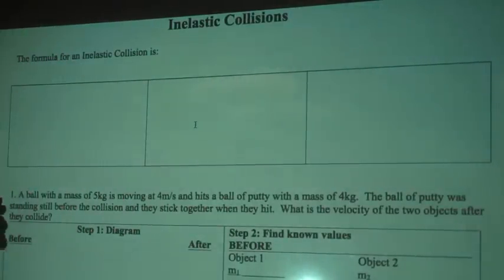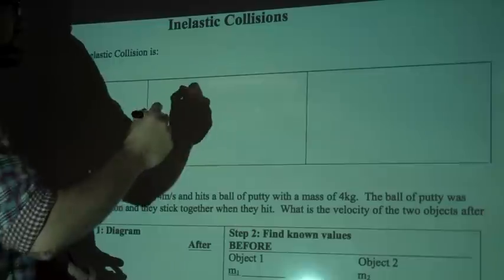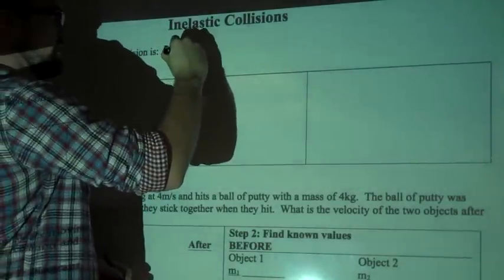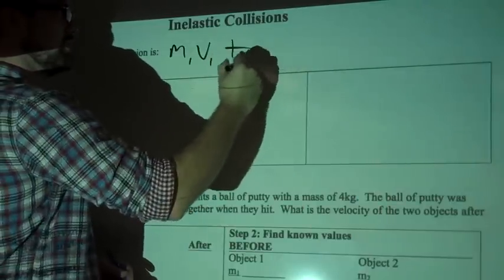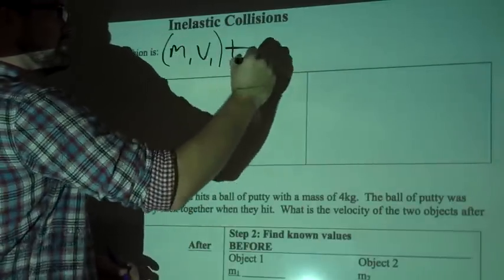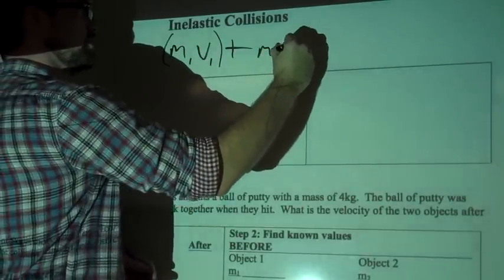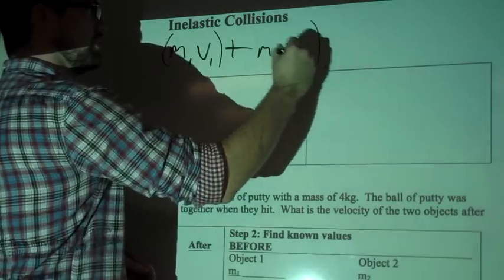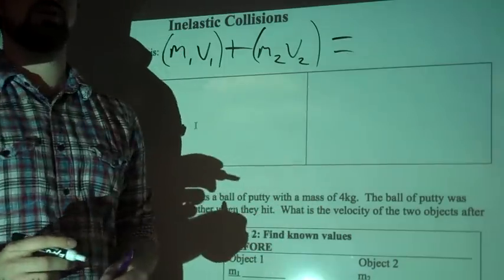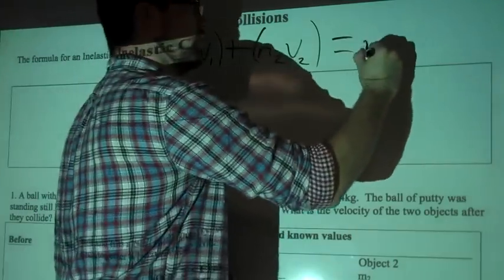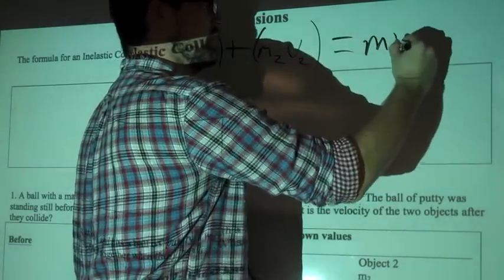The formula for an inelastic collision is this: mass 1, velocity 1, plus - and we're going to put that in parentheses - mass 2, velocity 2, in parentheses, equals mass and velocity.